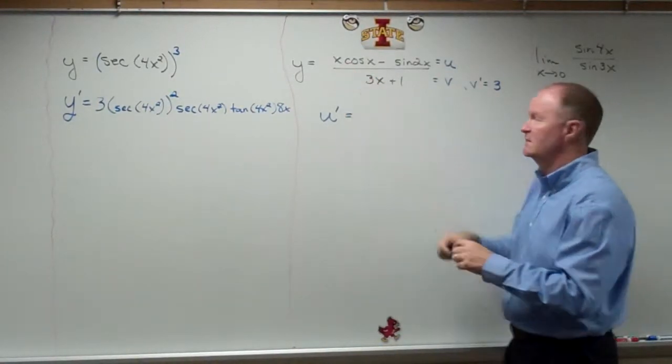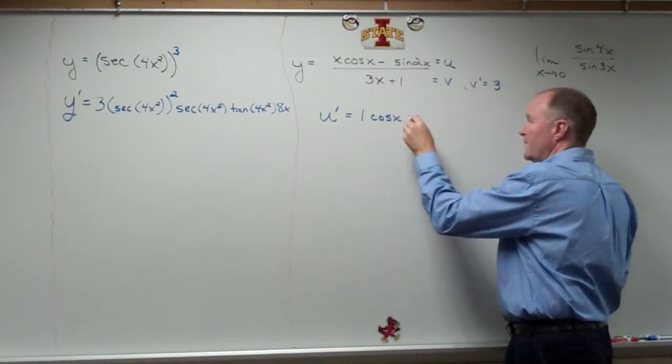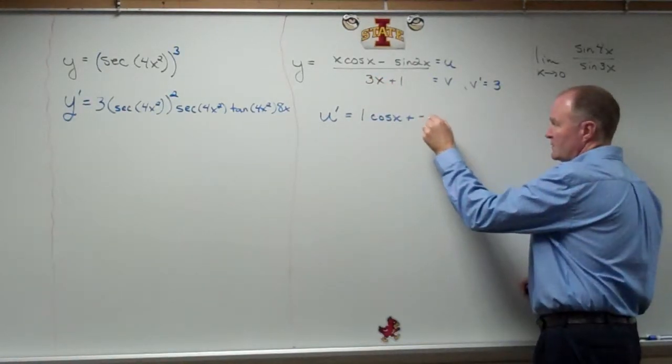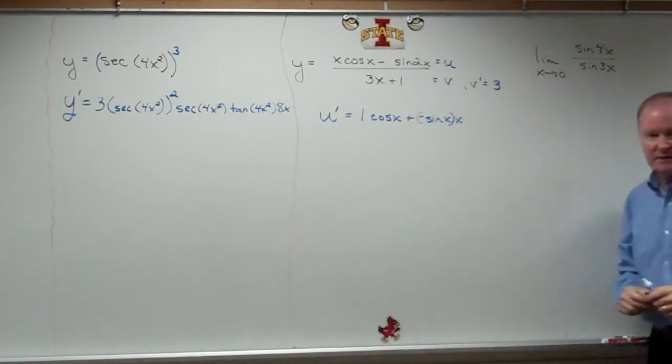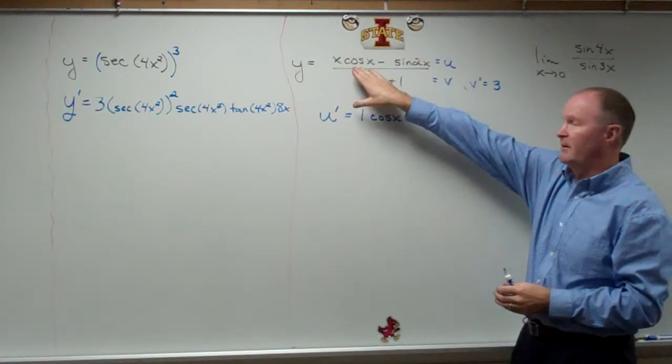So I have to take the derivative of x, which is 1 times the cosine of x, plus the derivative of the cosine, which is minus sine, times x. u prime v plus v prime u.